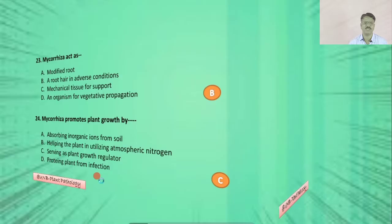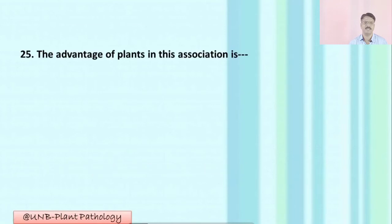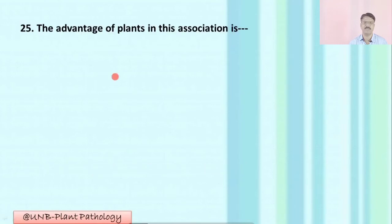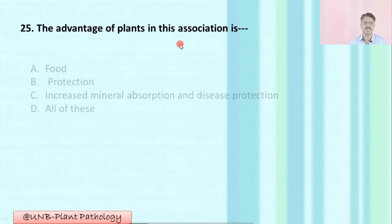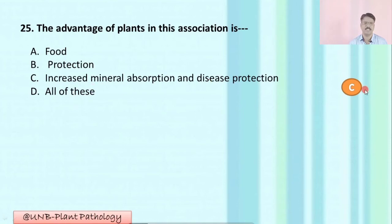Question number twenty-five: The advantage of plants in this association is — A: food; B: protection; C: increased mineral absorption and disease protection; D: all of the above. The correct option is C: increased mineral absorption and disease protection.